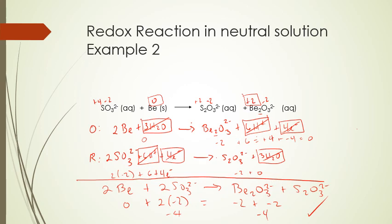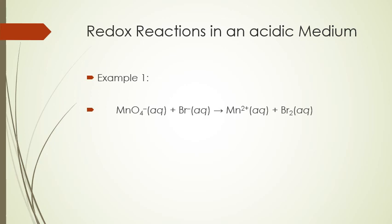We're now going to look at an example with an acidic solution. For an acidic solution, the rules are exactly the same as for neutral solutions. The only difference is that because of the acidic medium, there will be extra H⁺ ions in solution at the end — so the H⁺ ions won't cancel off. Assigning oxidation numbers: permanganate MnO₄⁻ has manganese at plus seven (four oxygens at minus two give minus eight; plus the minus one charge overall). The bromide ion is minus one. On the product side, manganese ion is plus two, and bromine is zero. The permanganate ion is the oxidizing agent and the bromide ion is the reducing agent.